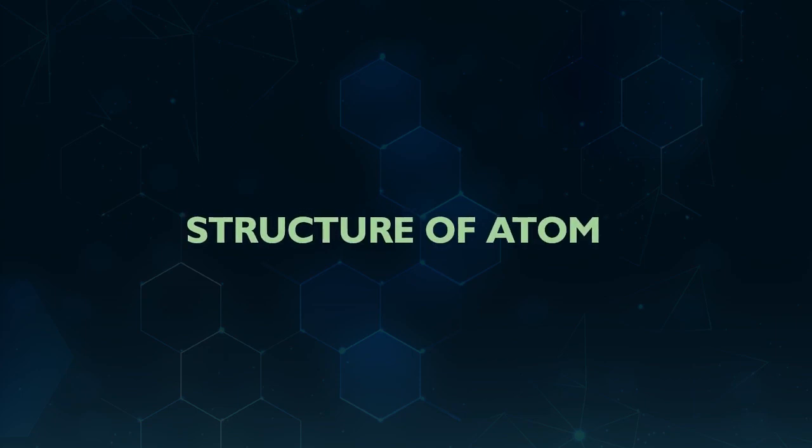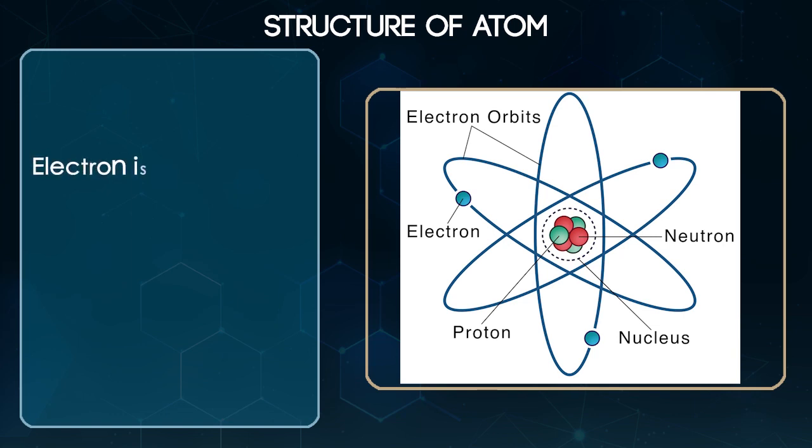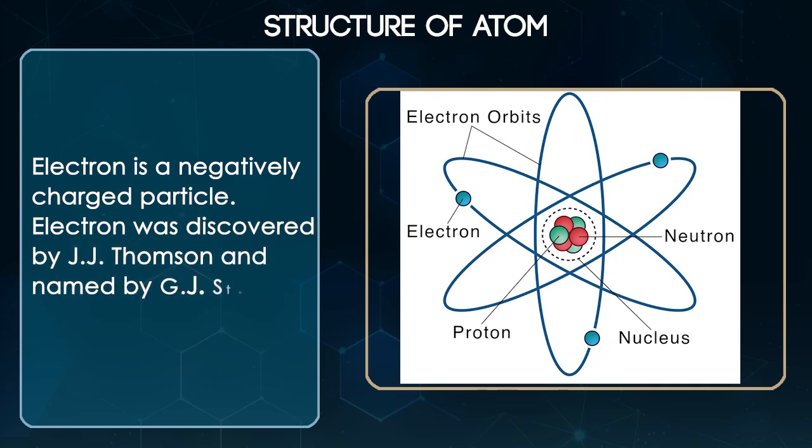Structure of Atom. Electron is a negatively charged particle. Electron was discovered by J.J. Thomson and named by J.S. Stoney.